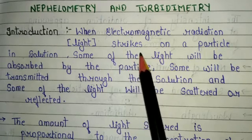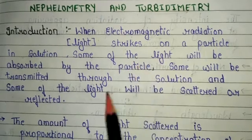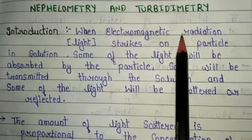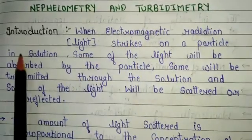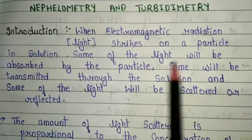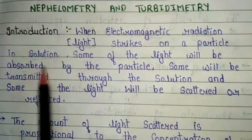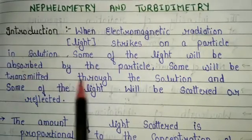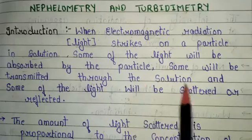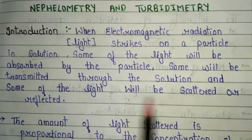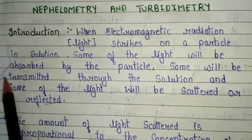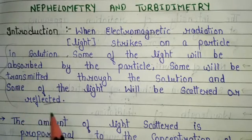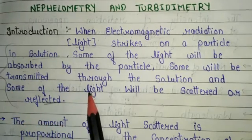So what is nephelometry and turbidometry? The basic introduction is: when electromagnetic radiation or light strikes on a particle in solution, some of the light will be absorbed by the particle, some will be transmitted to the solution, and some of the light will be scattered or reflected.